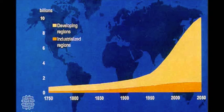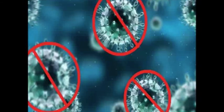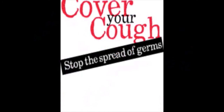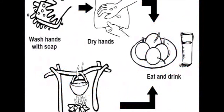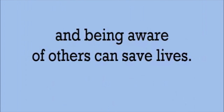Why is this a global issue? Because people are struggling and dying from them. Luckily, there are some easy ways to prevent them. Simple rules like washing your hands, not touching other people's blood or bodily fluids, and being aware of others can save lives.